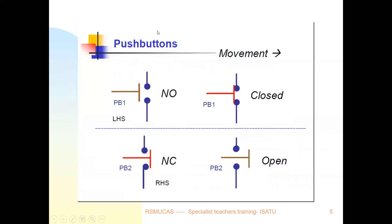In this illustration we have a push button switch, a type of switch used for programmable logic controllers. We have two types of push button switches that we will focus on in our discussion: the normally open contact type and the normally closed contact type.